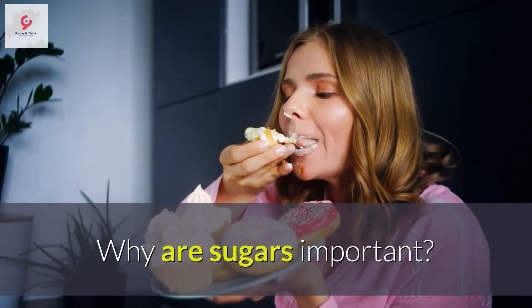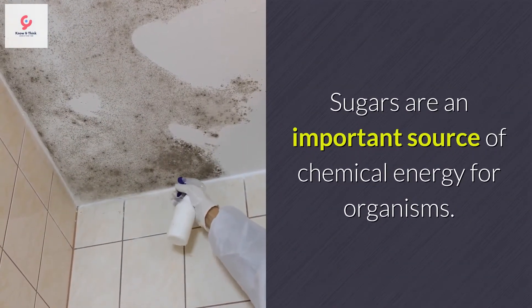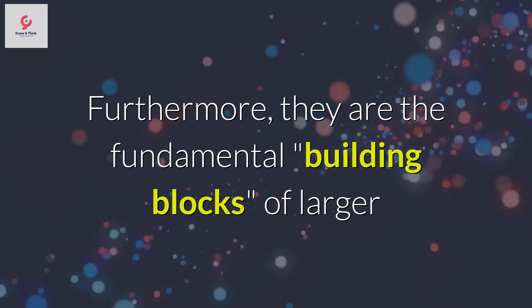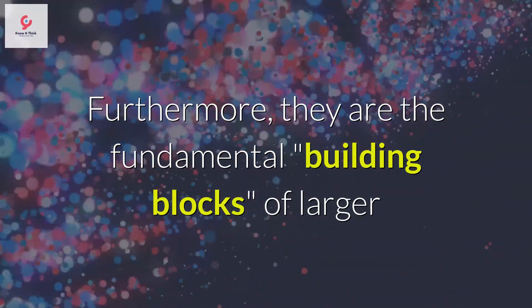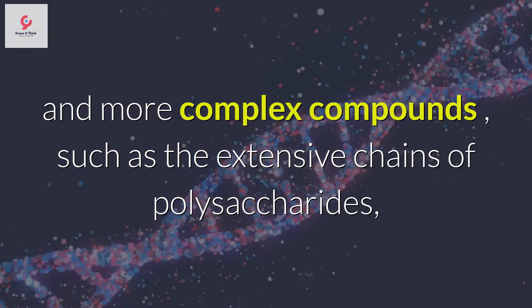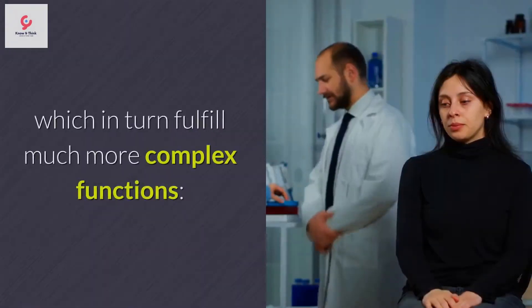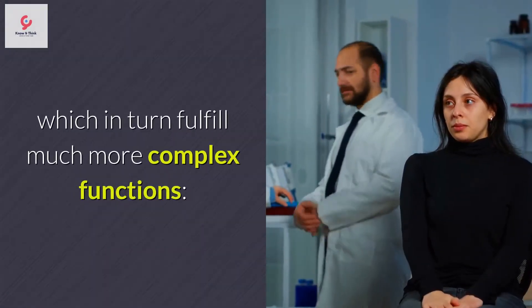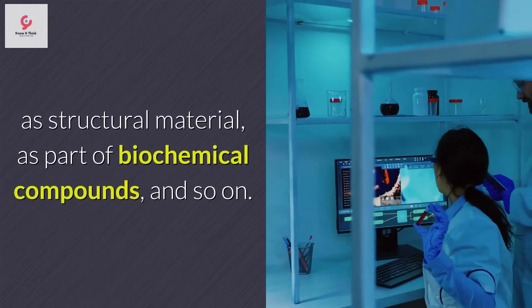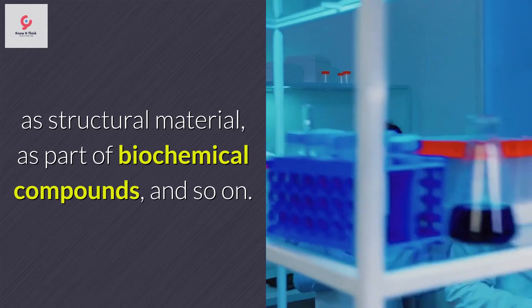Why are sugars important? Sugars are an important source of chemical energy for organisms. Furthermore, they are the fundamental building blocks of larger and more complex compounds, such as the extensive chains of polysaccharides, which in turn fulfill much more complex functions — as structural material, as part of biochemical compounds, and so on.